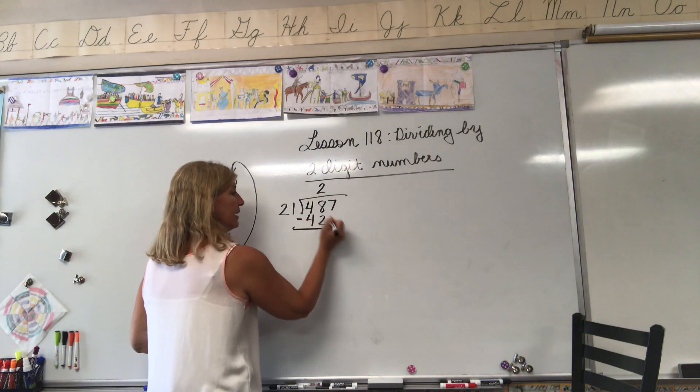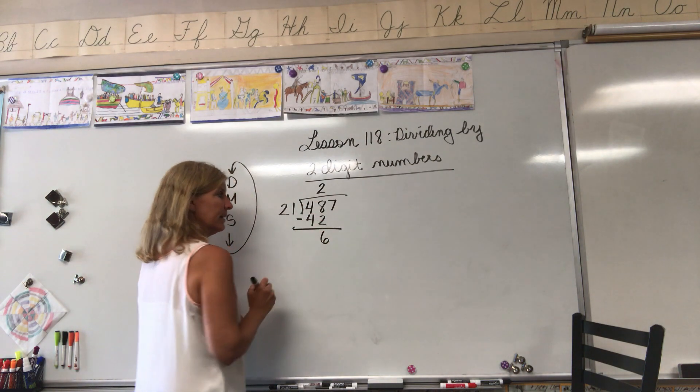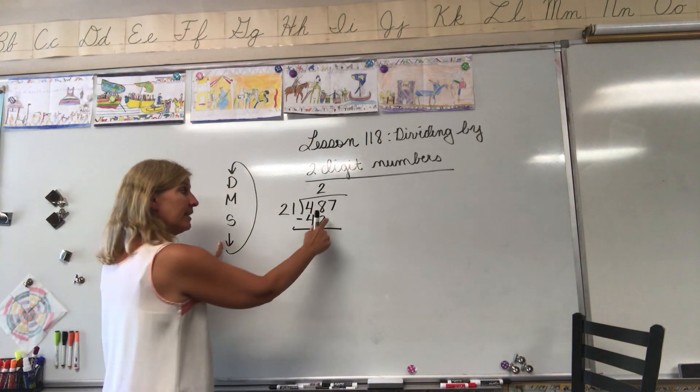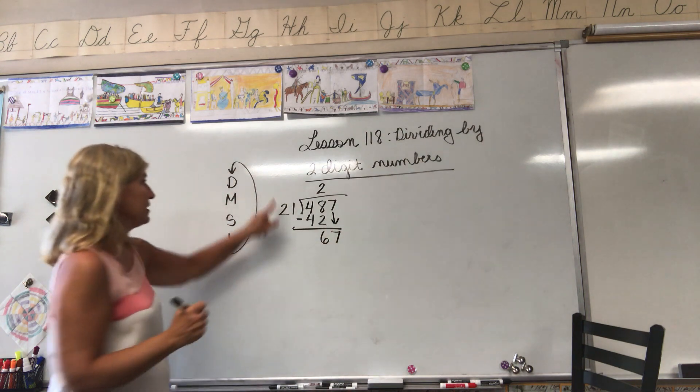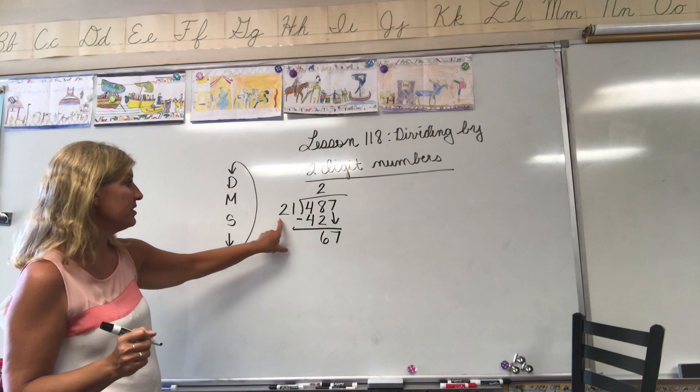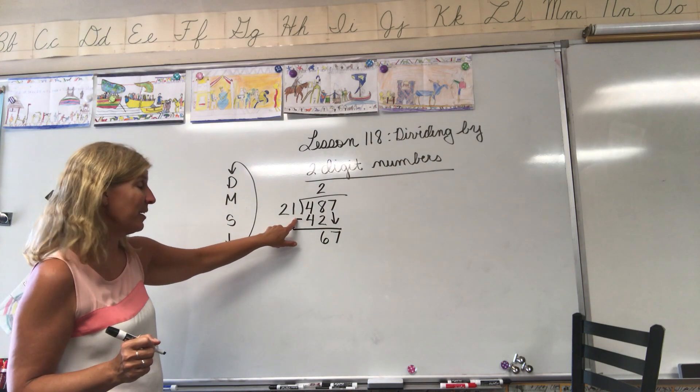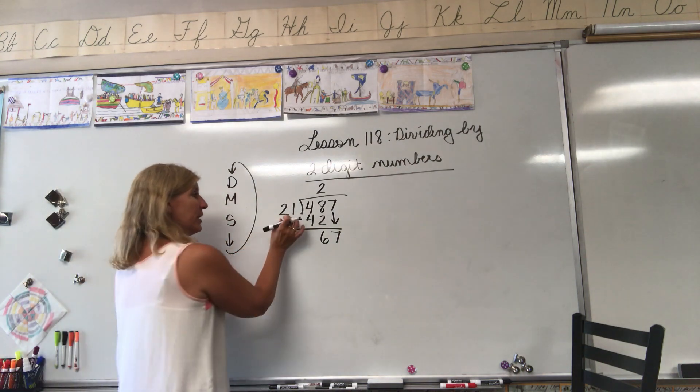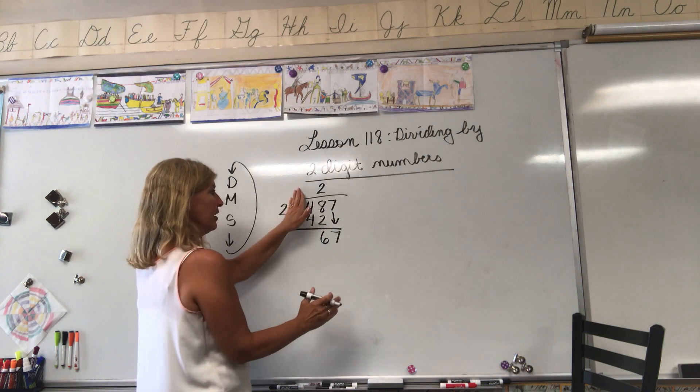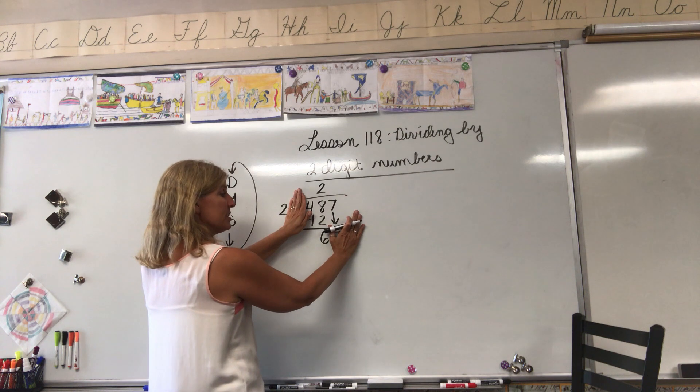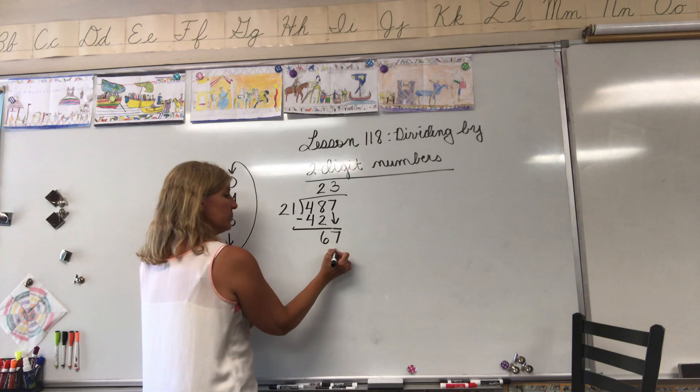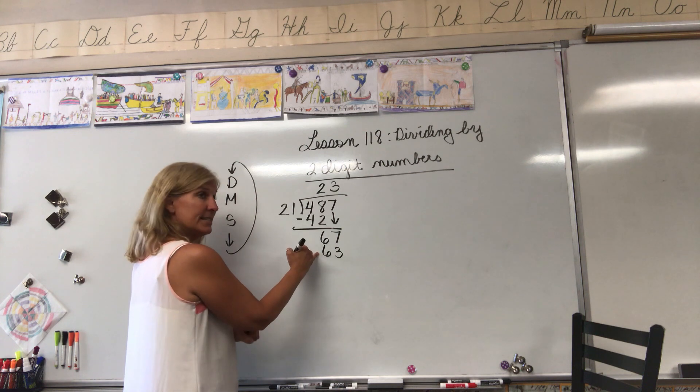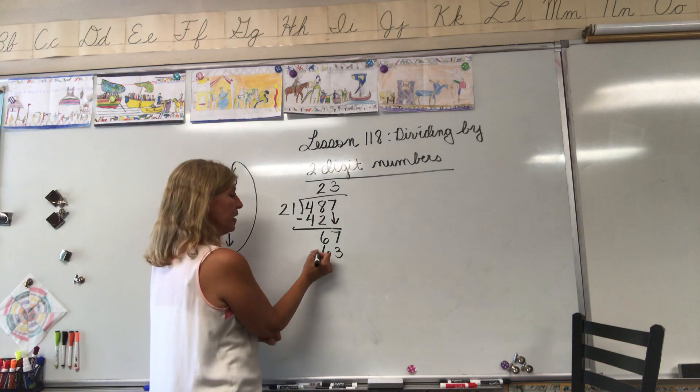8 minus 2 equals 6. Bring down. Do we have anything to bring down? Yes we do, we're bringing down the 7. Come back to the top, divide. 67 divided by 21. How many 21s are in 67? Cover the ones place, that might give us a good place to start. 6 divided by 2 equals 3. Let's give that a try. 3 times 1 equals 3, 3 times 2 equals 6. Is 63 bigger than 67? Nope, we're good, we can continue.